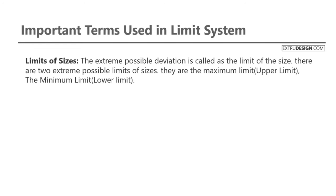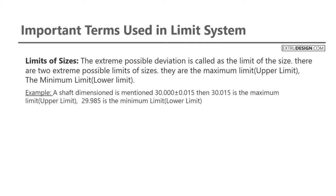The next term is limits of sizes. The extreme possible deviations are called limits of sizes. There are two extreme possible limits: maximum limit and minimum limit. For example, a shaft dimensioned as 30.000 ± 0.015 gives a maximum limit of 30.015 and a minimum limit of 29.985.